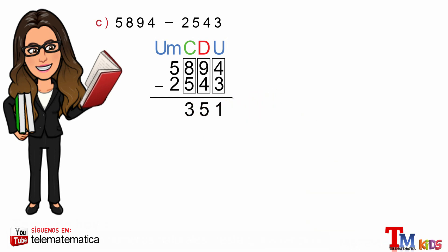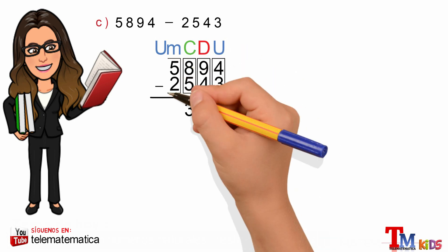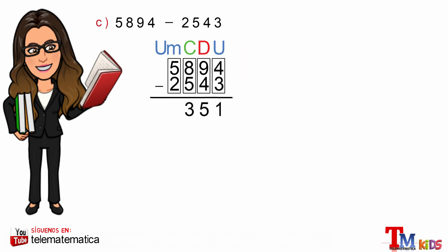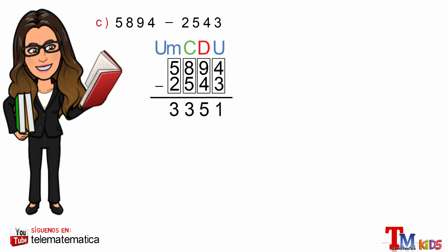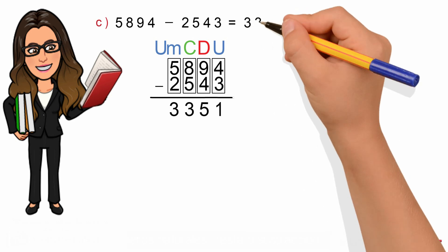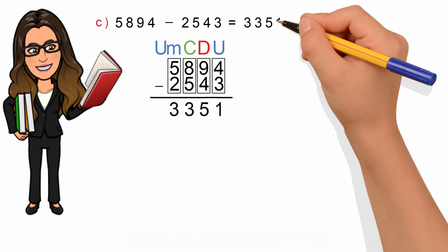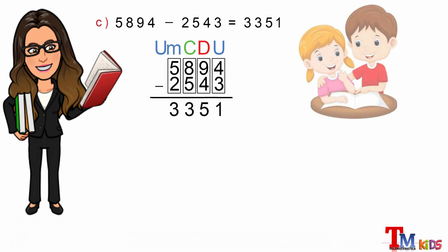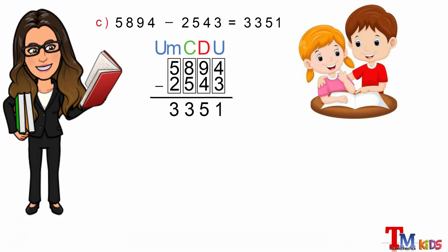Y por último, la columna de las unidades de mil: 5 menos 2 es igual a 3. Este resultado lo escribimos en la operación: 5894 menos 2543.